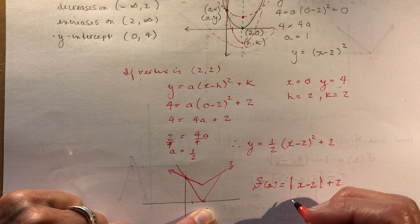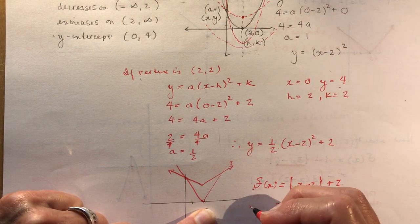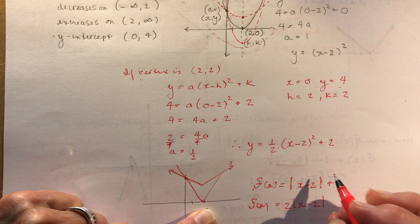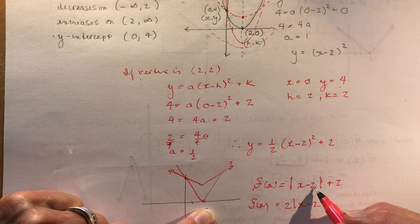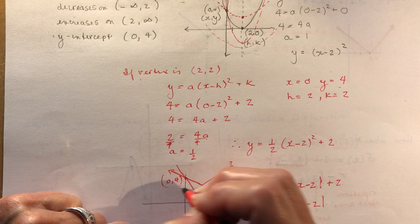Or we could have something like 2|x minus 2|. And you can see that if I plugged in 0 here, the absolute value of minus 2 is 2, and 2 plus 2 is 4. That would still give me my y-intercept.